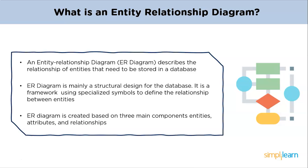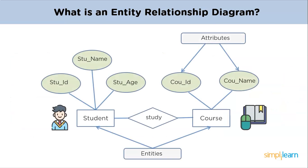Let's have a view of an ER Diagram. The following diagram showcases two entities — student and course — and their relationship. The relationship described between student and course is many-to-many, as a course can be opted by several students and a student can opt for more than one course. Student is the entity and it possesses the attributes student ID, student name, and student age, while the course entity has attributes course ID and course name.